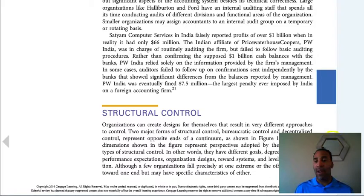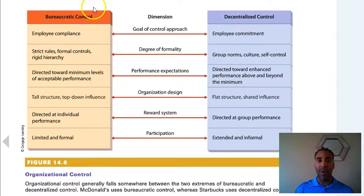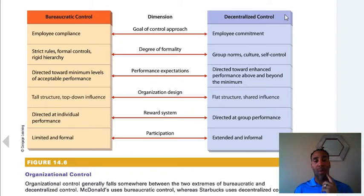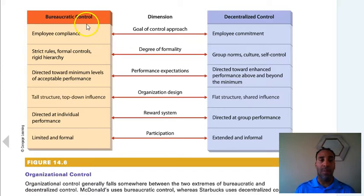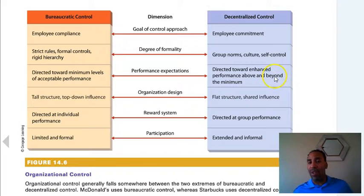Structural control — be sure to check that out. Bureaucratic control means a lot of red tape. Decentralized control means that, like in certain organizations, you have the East, Midwest, South, and West, and decisions can be made in each area. They funnel up to the president, but they've been empowered to make most decisions. Bureaucratic control involves employee compliance, strict rules, formal controls, a rigid hierarchy. Decentralized has employee commitment, group norms, culture, a flat structure directed at group performance.